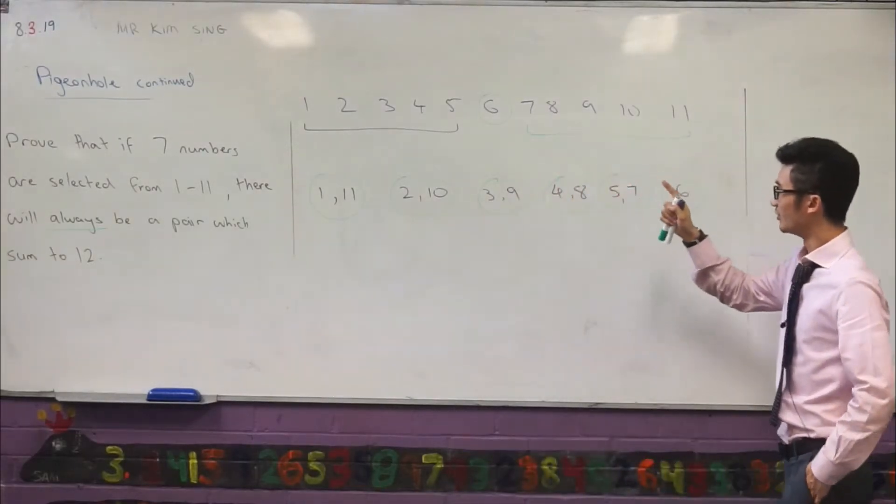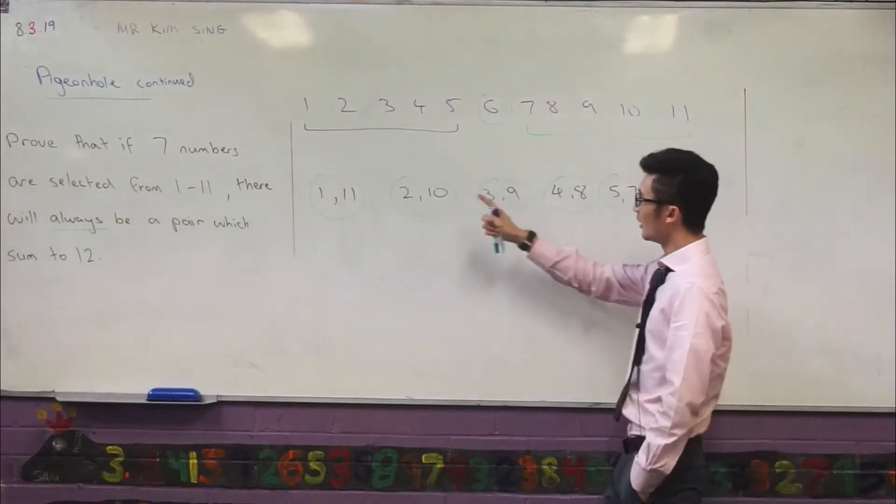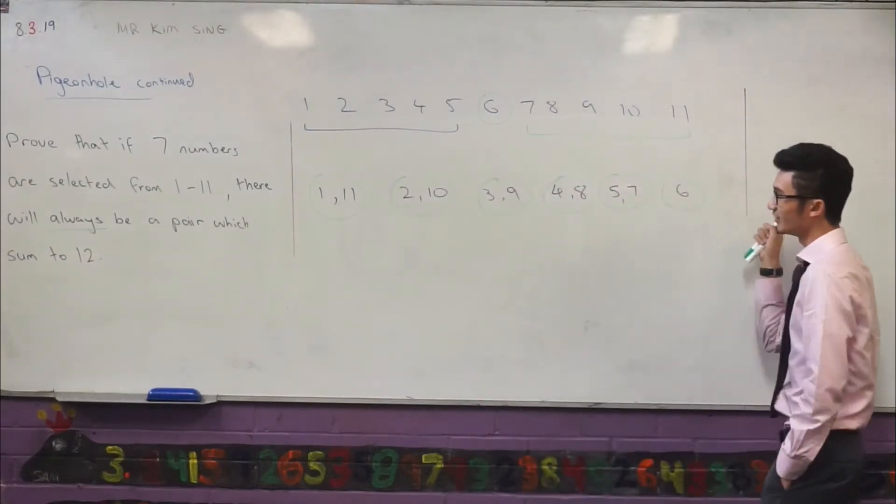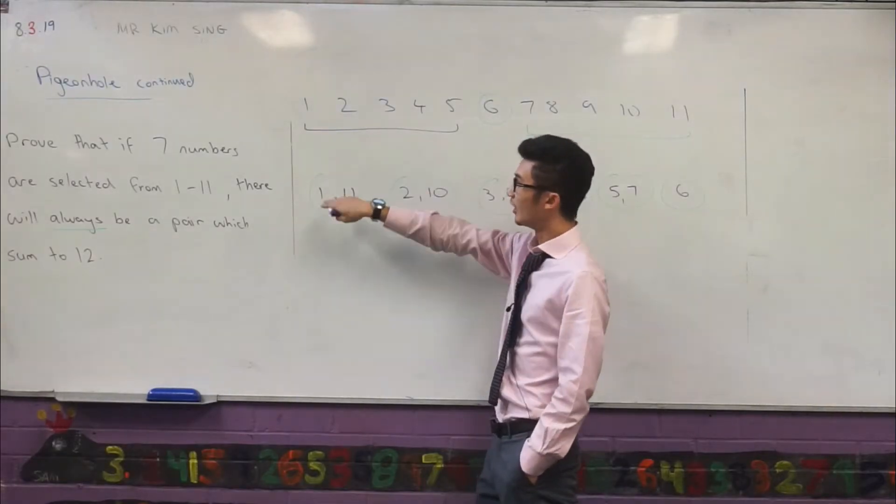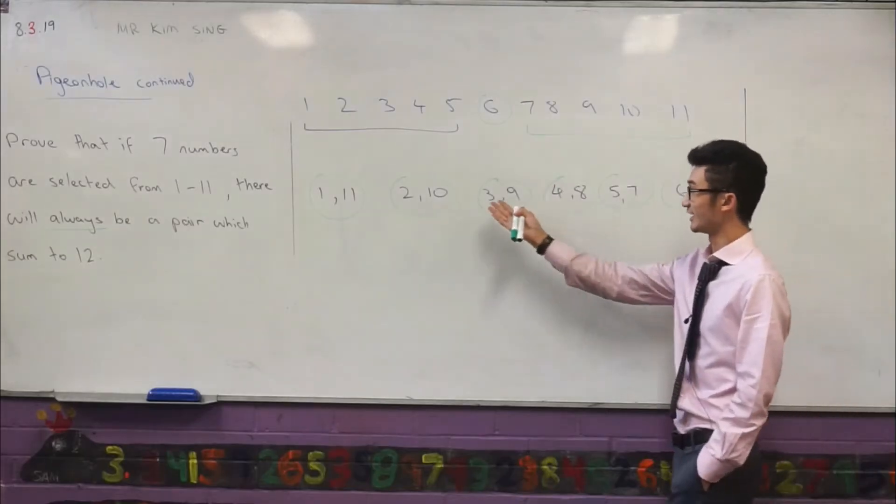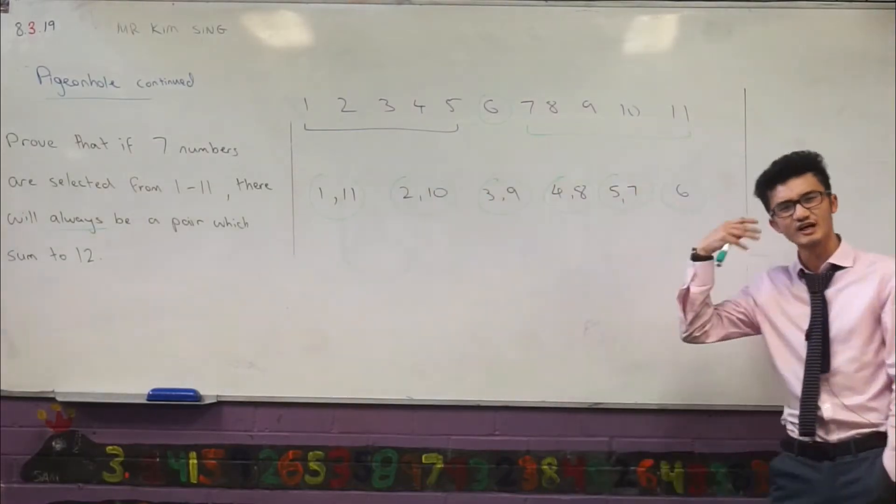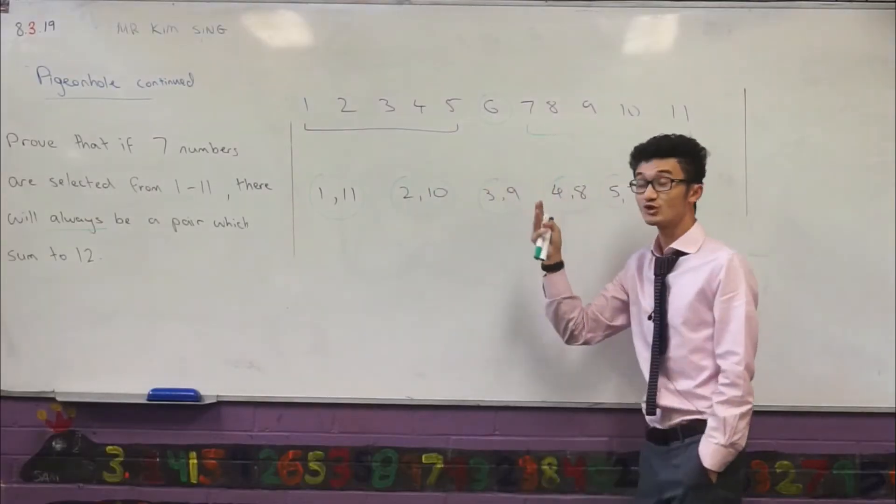But if I'm choosing 7 numbers, once I've chosen these 6 here, and I'm trying to avoid this, it doesn't matter which one I choose next. I will always have to have at least two of these numbers being selected. And I always have to select a pair of these here. And that's the kind of intuition I'm thinking about.